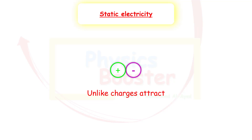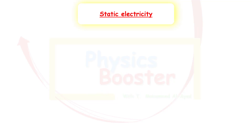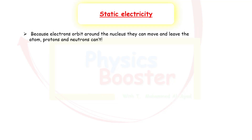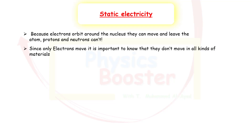After refreshing this information about charges — positive, negative, and how they interact — let's see what that has to do with static electricity. Because electrons orbit around the nucleus, they can move and leave the atom. But keep in mind: protons and neutrons cannot leave the atom because they are attached very close to each other inside the nucleus.